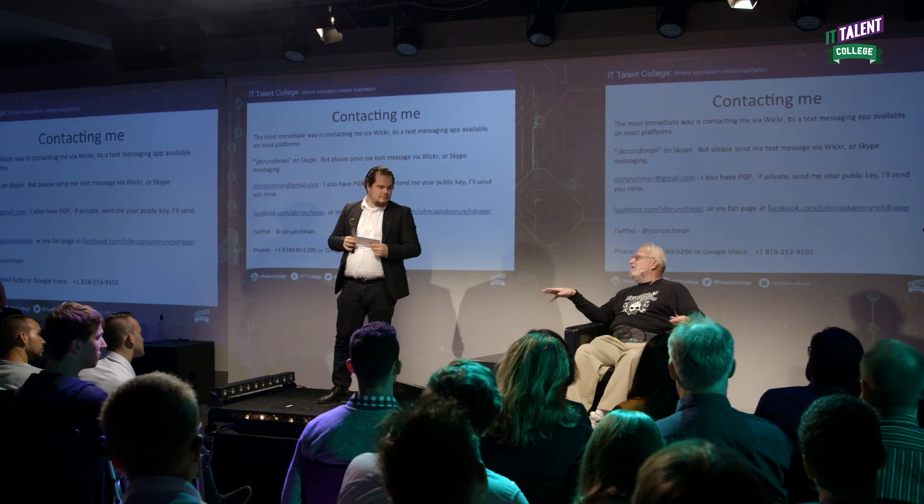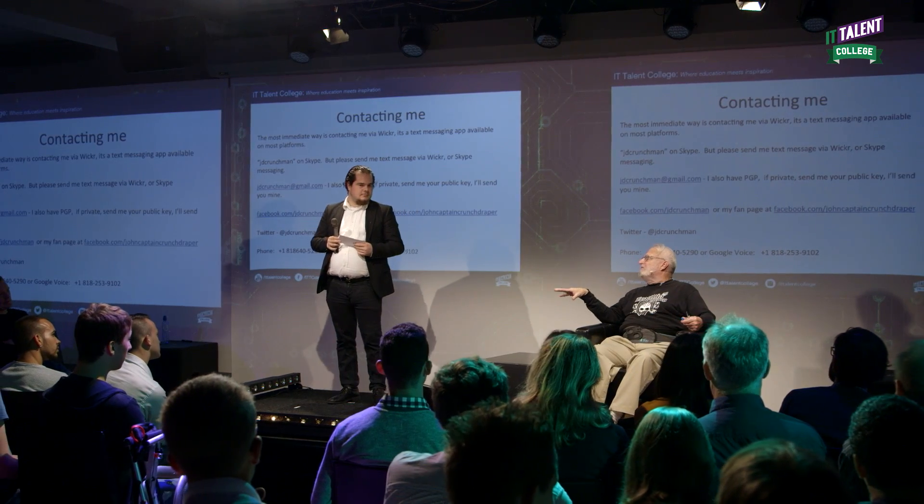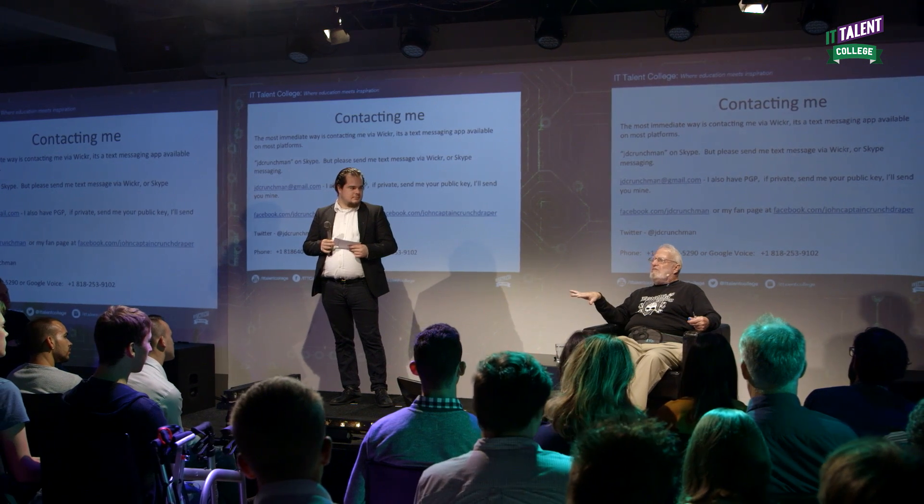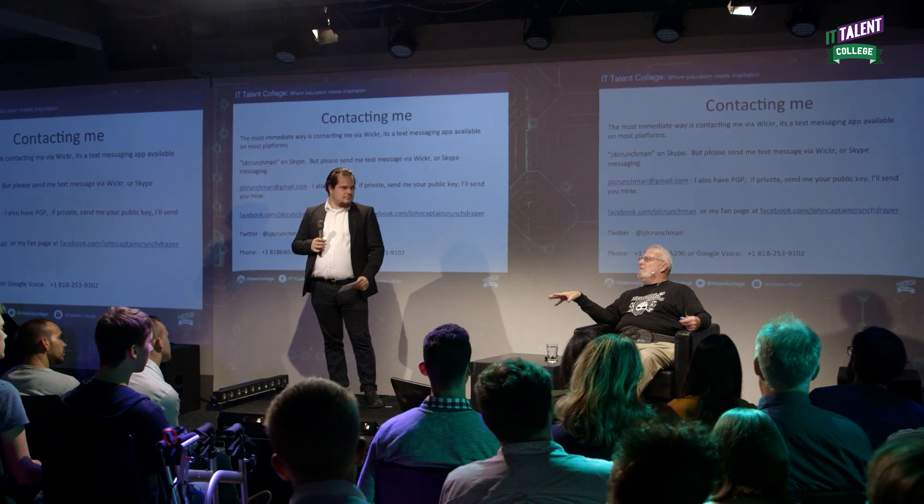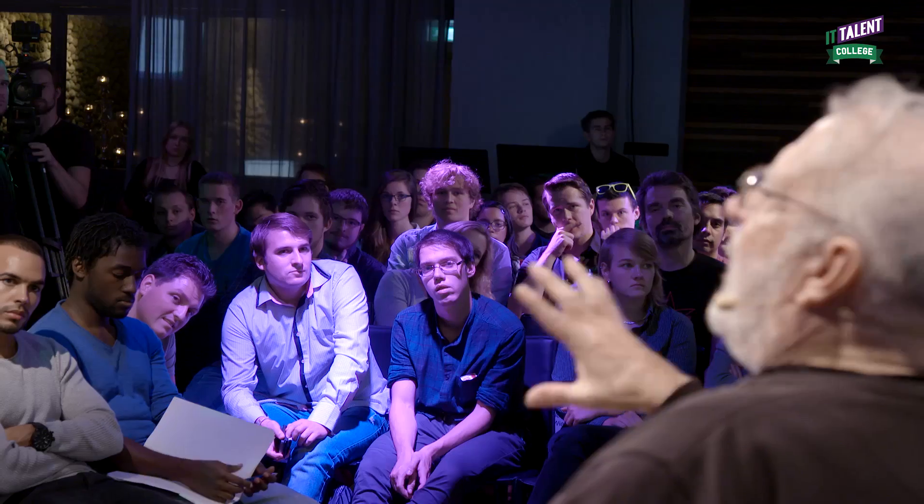My goal is by the end of the year every single bit of information that I send will be encrypted. The only public information I'm going to have will be an unsecured way for people just to contact me, and then I'll give them my Wickr name. You just take a Wickr name that has nothing to do with who you are — I don't know who you are but you know who I am. You can remain anonymous.